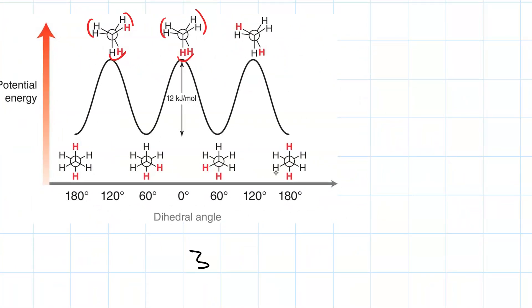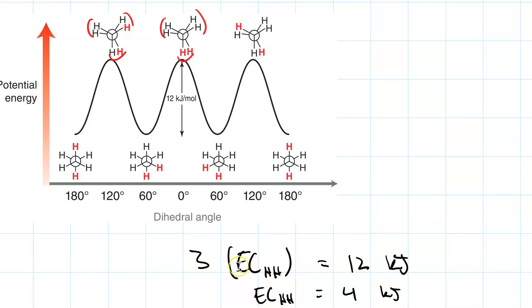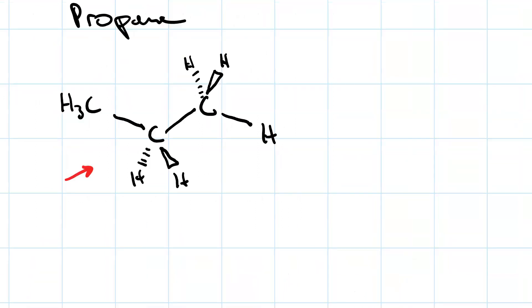So three times the H–H eclipsing interaction equals 12 kilojoules. Dividing by three, the cost of a hydrogen–hydrogen eclipsing interaction is 4 kilojoules per mole. Let's update our notation: the H–H eclipsing interaction equals 4 kilojoules per mole.